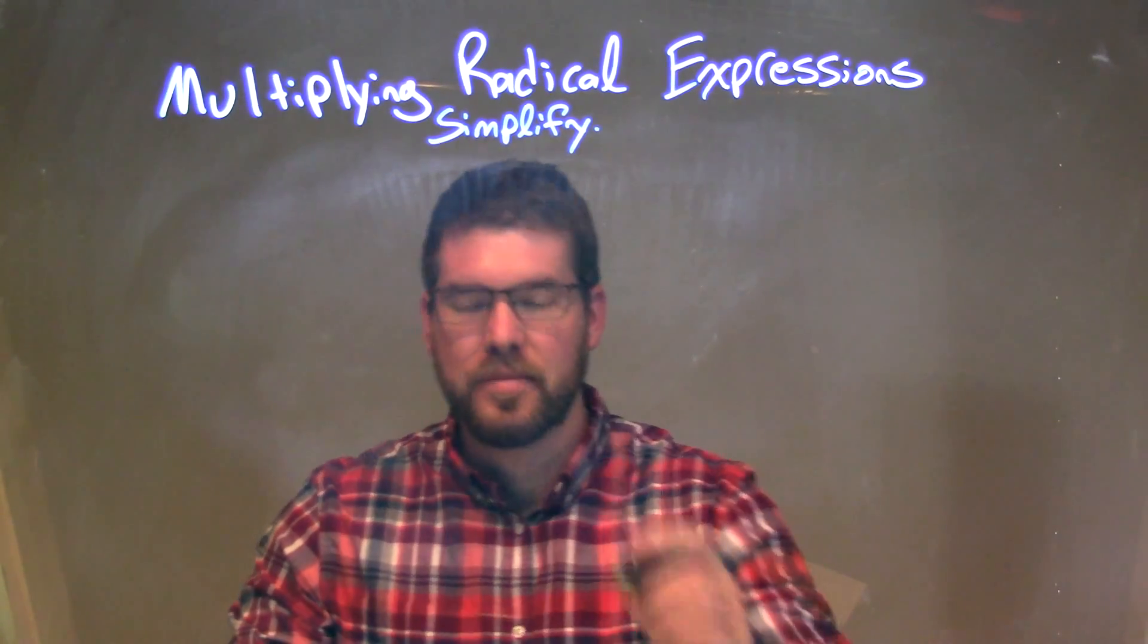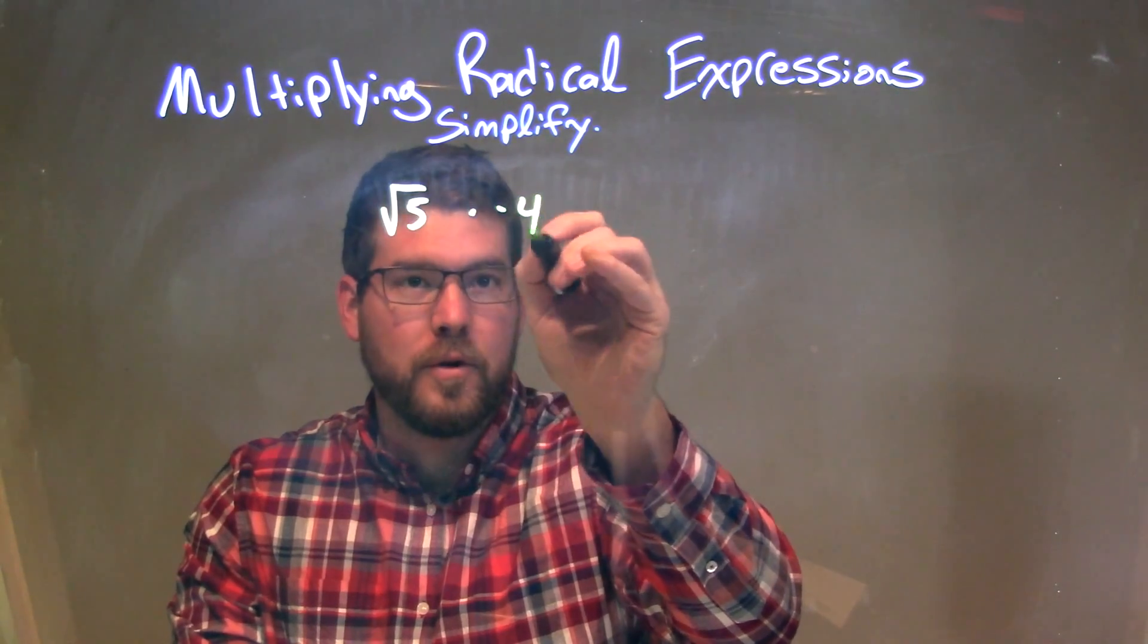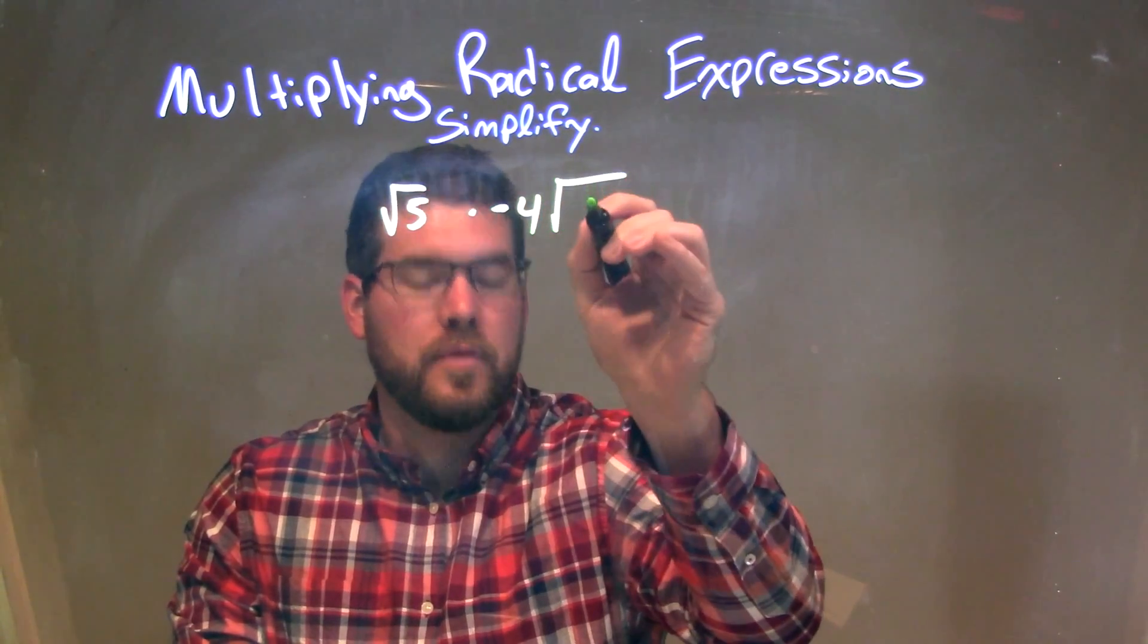So I'm giving you this expression: square root of 5 times negative 4 times the square root of 20.